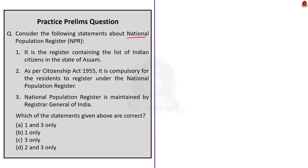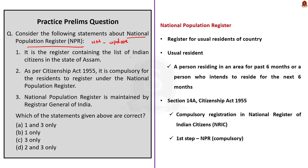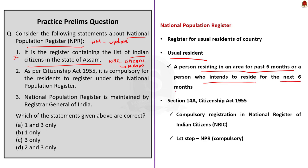The next question is about the National Population Register. The Home Ministry recently said there is a need to update the NPR. First statement says NPR is the register containing the list of Indian citizens in Assam — this is incorrect. The National Register of Citizens (NRC) contains the list of Indian citizens, and only Assam currently has NRC. NPR is a register of usual residents of the country. Usual residence is defined as a person who has resided in a local area for the past six months or more, or who intends to reside there for the next six months or more. Even a foreigner can be declared a usual resident and registered under NPR, but cannot be included in NRC.